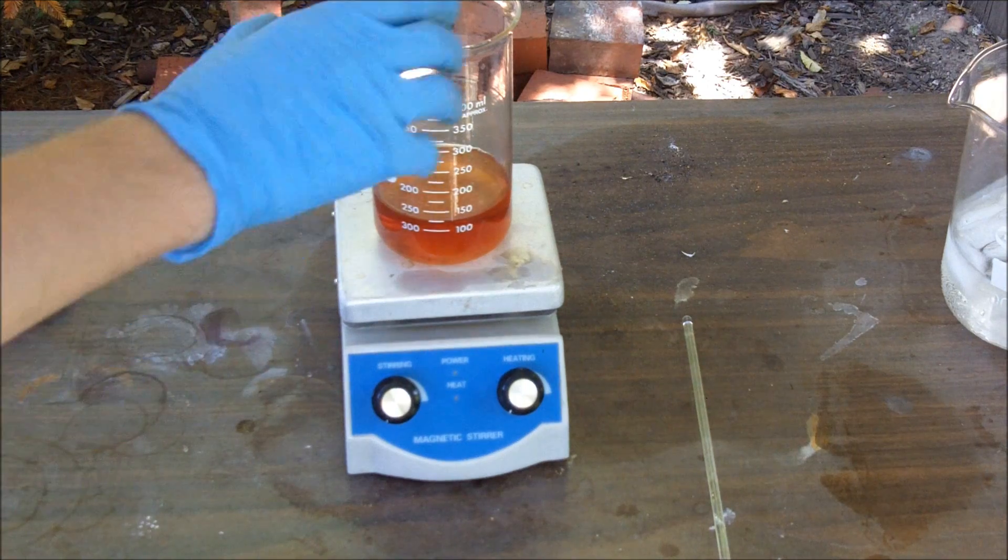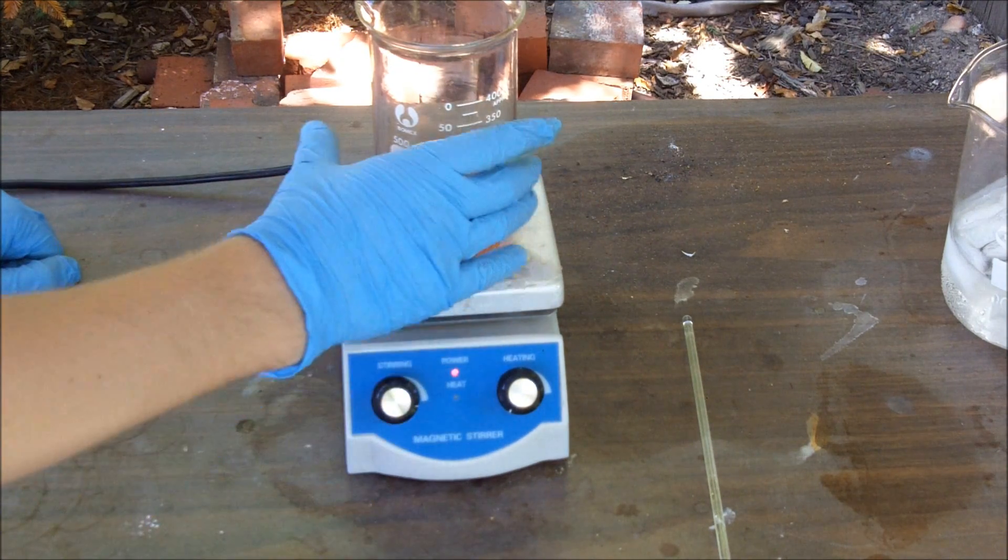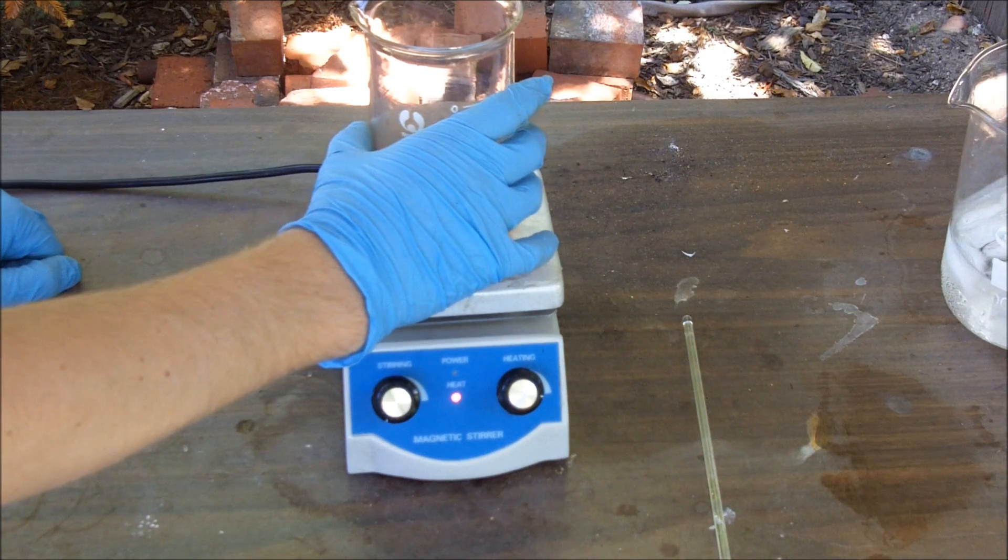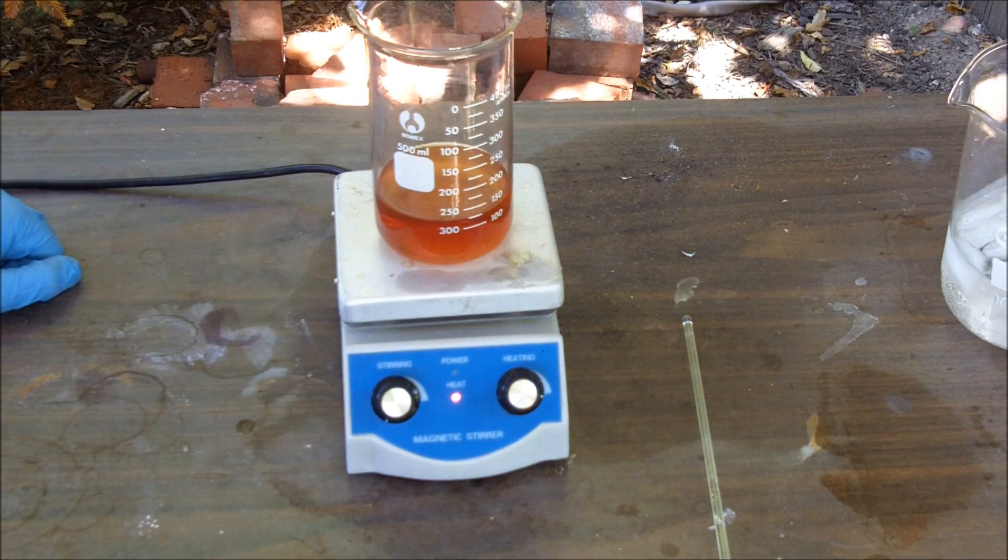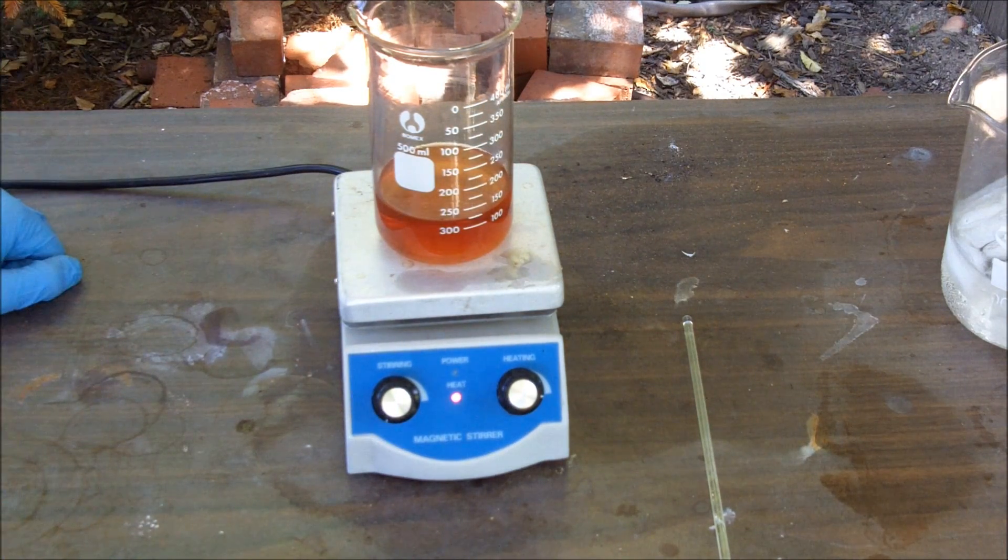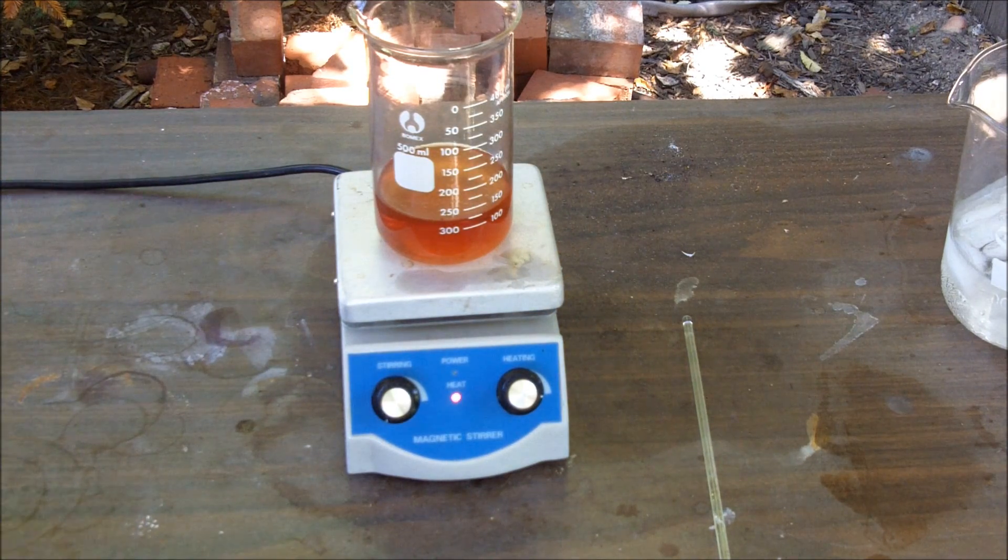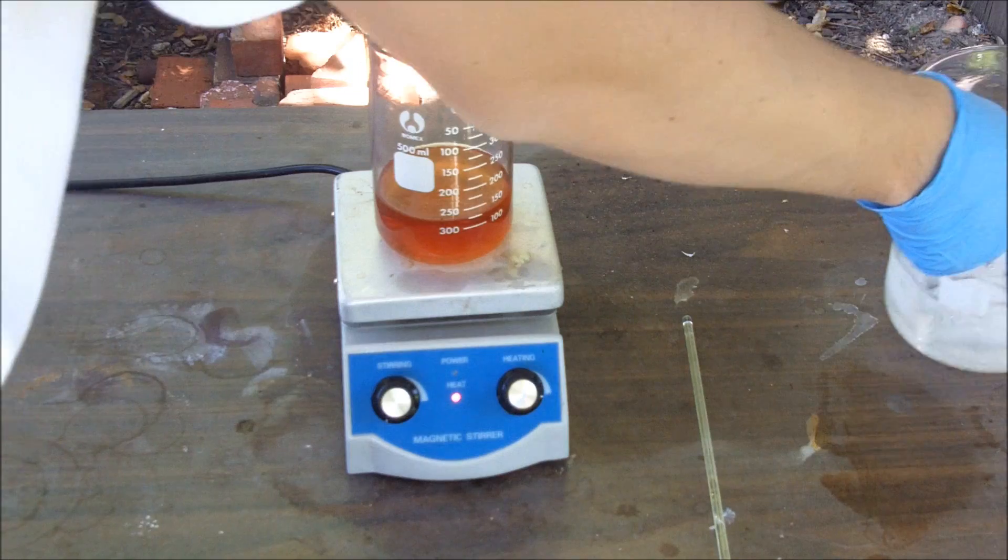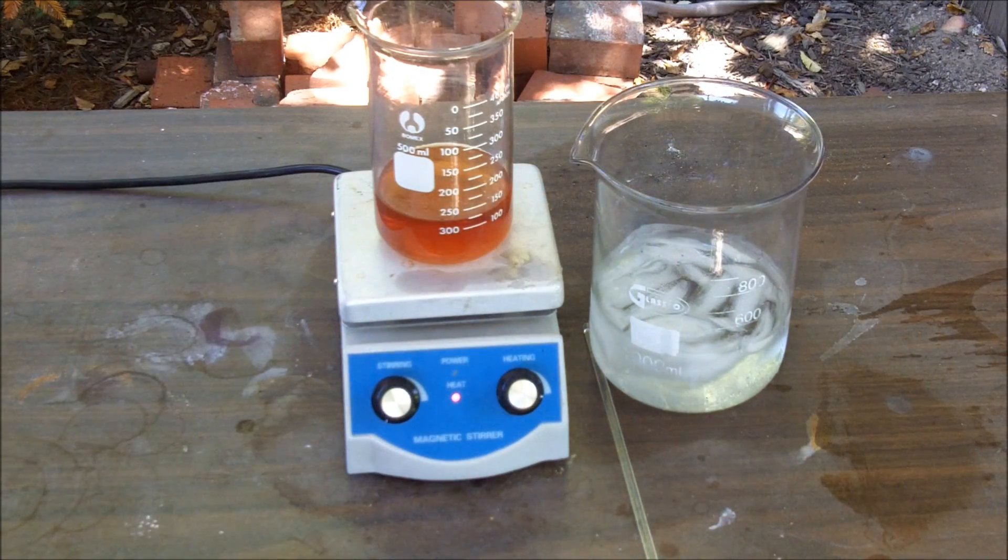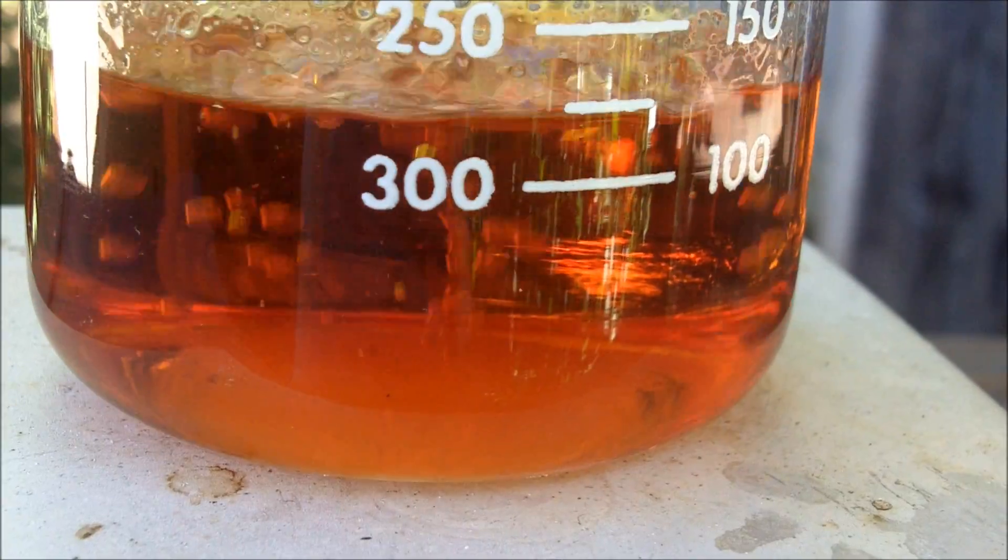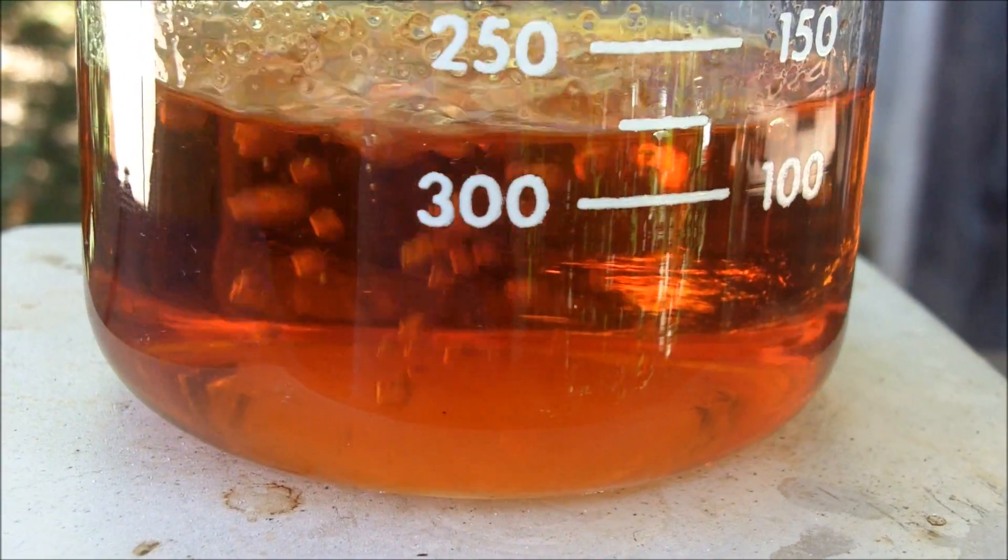Now that I have added the ketazine to the acid, I am going to heat up the mixture to drive off the methyl ethyl ketone and drive that reversible reaction forward. This will produce hydrazine sulfate. After it has boiled down a bit, I will add it to this ice bath here to crystallize the hydrazine sulfate and then vacuum filter. And we can see it boiling pretty nicely now.